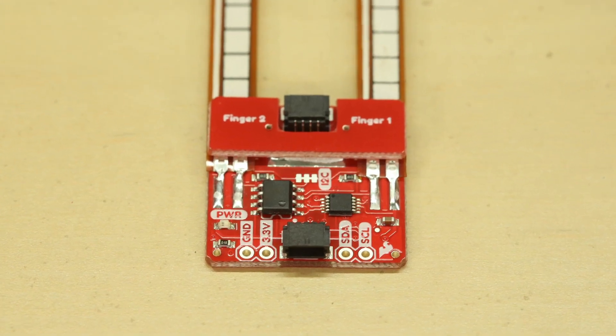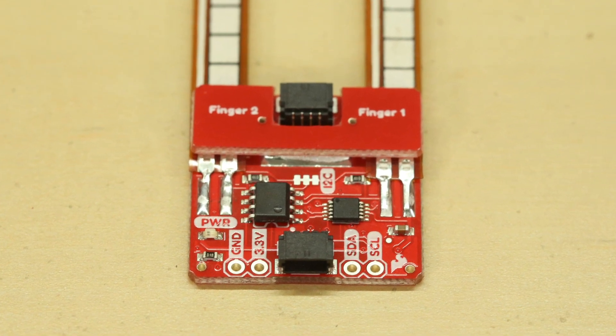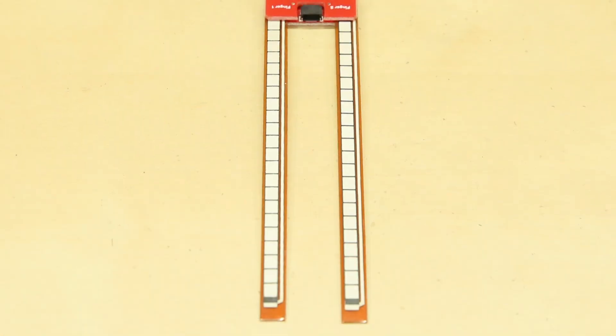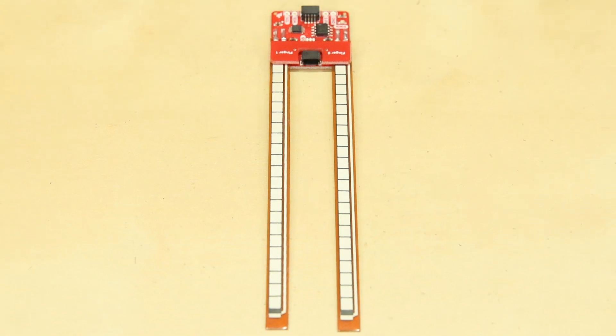As you can see from the board it is equipped with two quick connectors to make I squared C easy as well as two 4.5 inch flex sensors from Spectra Symbol.